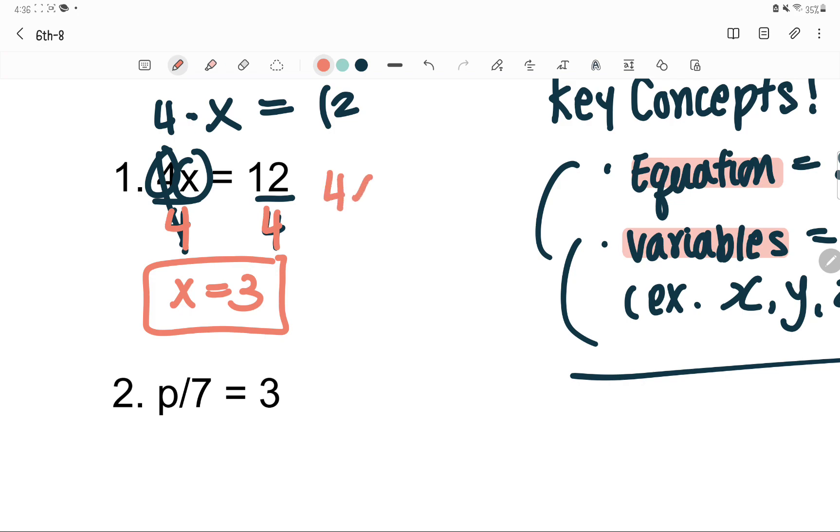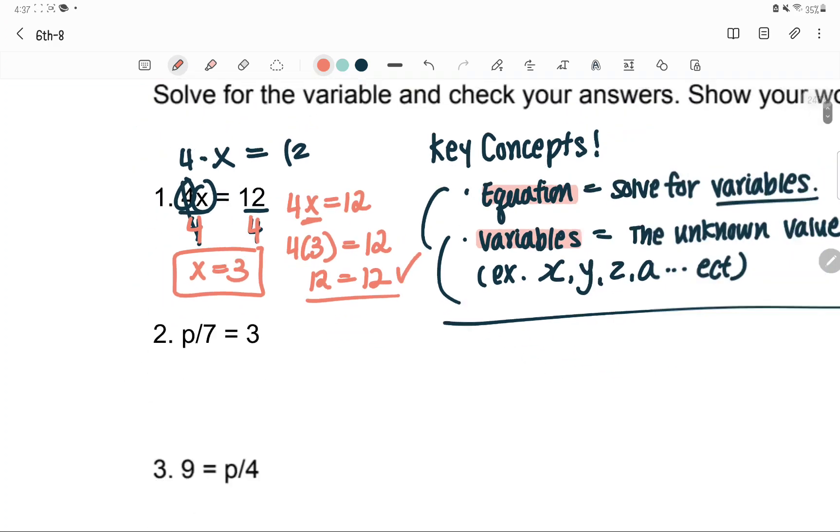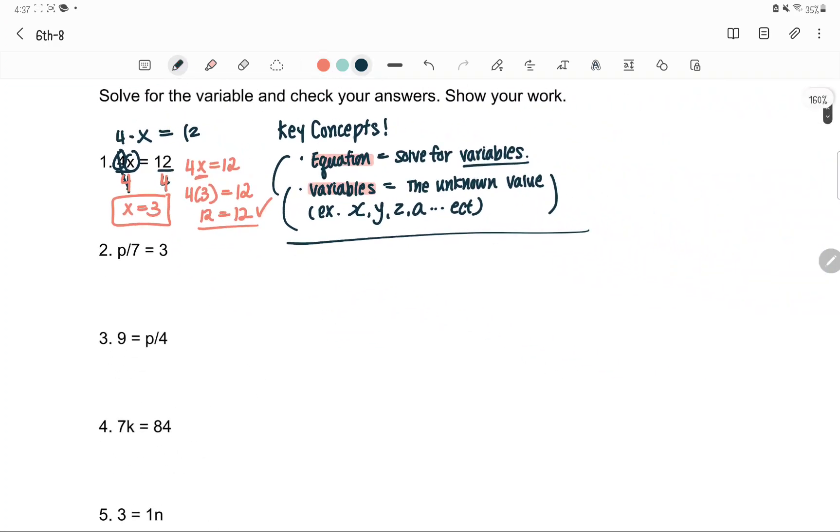Always check. 4x equals 12, and we got x is 3. So 4 times 3, substitute 3 into the x, equals 12. 4 times 3 is 12, so we got the right answer. This is the way you check the answer, see if you got it right.